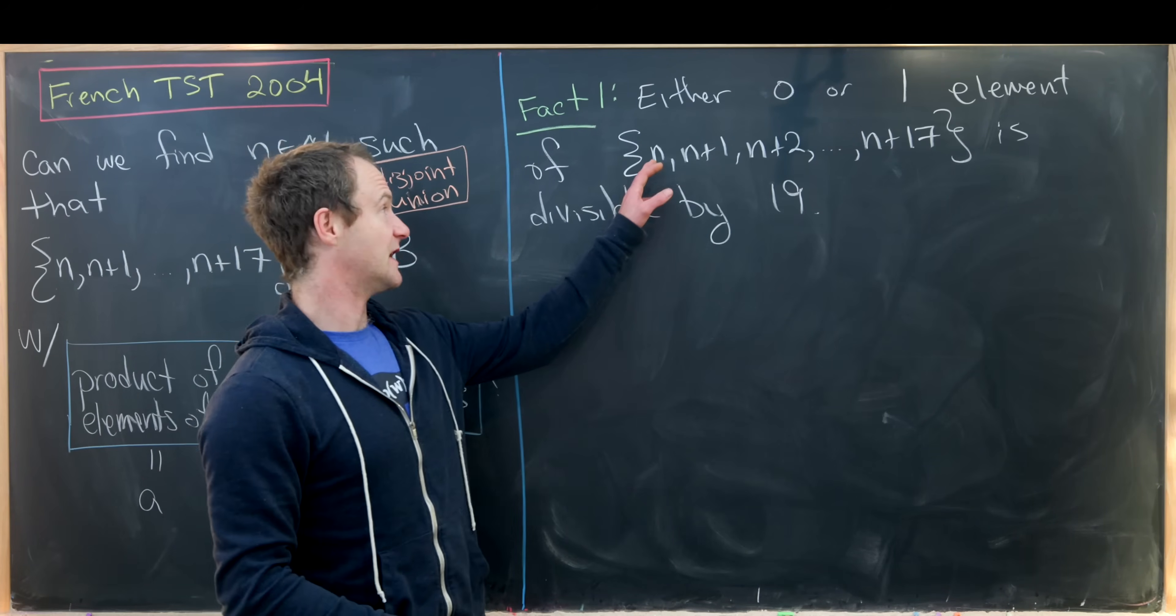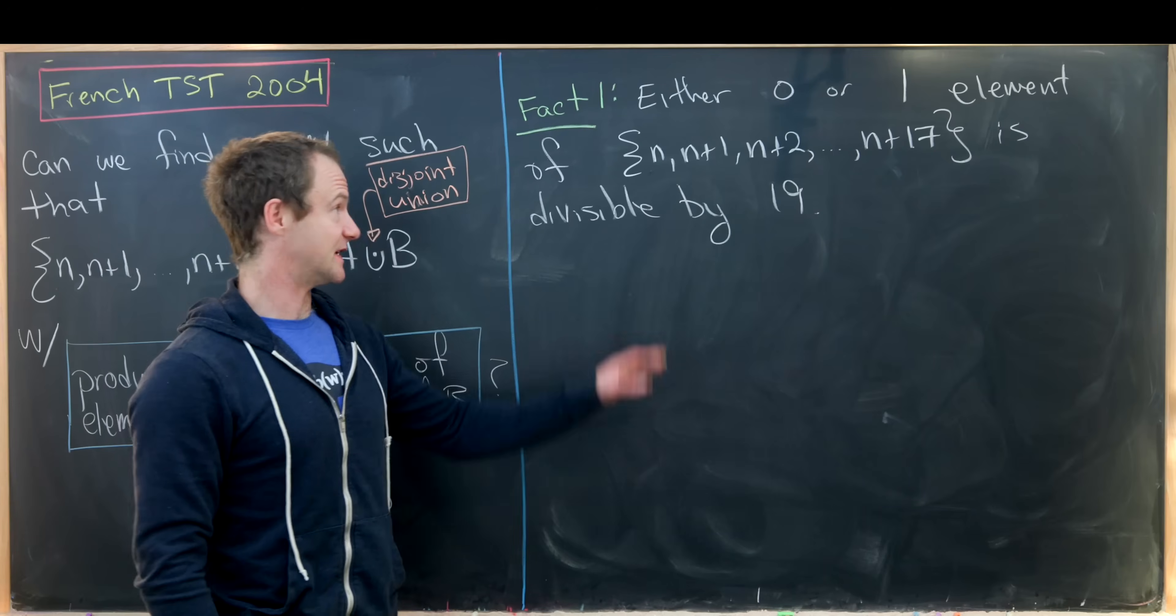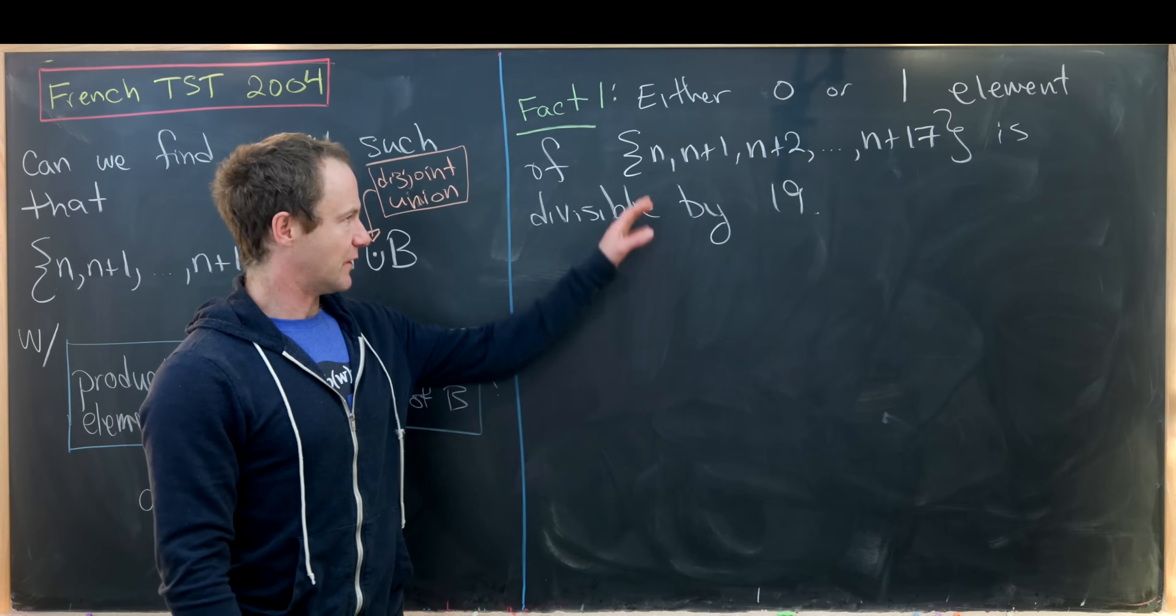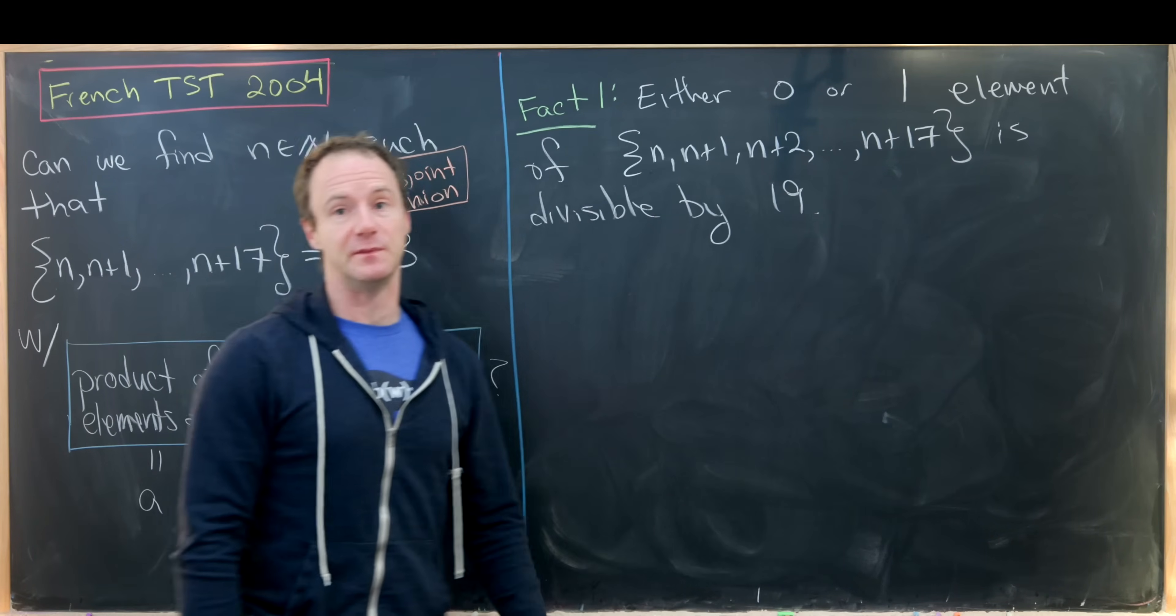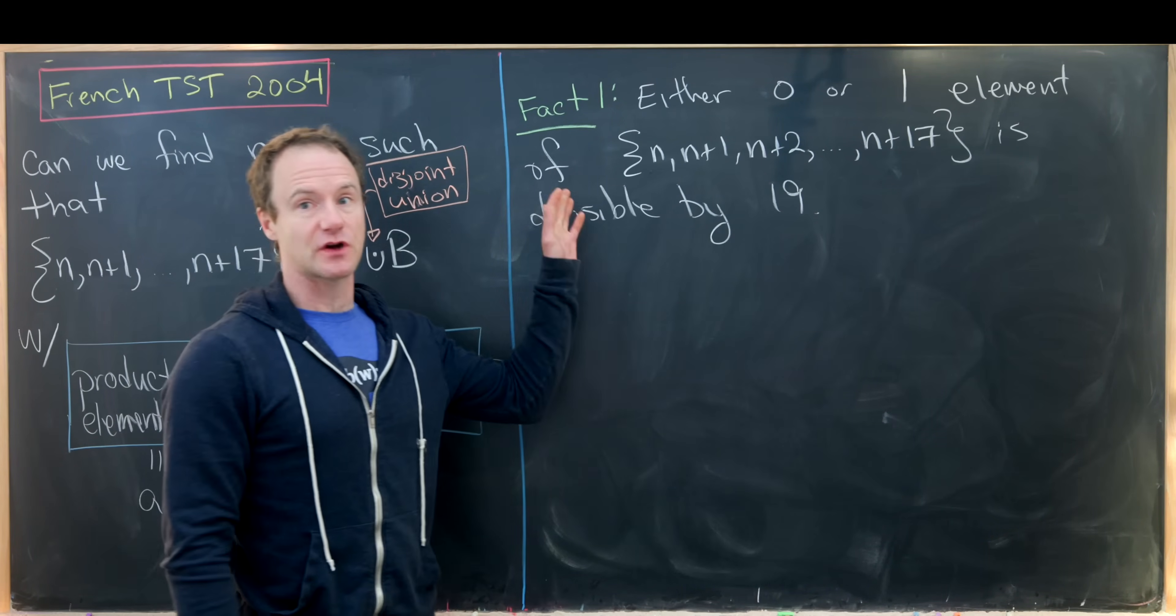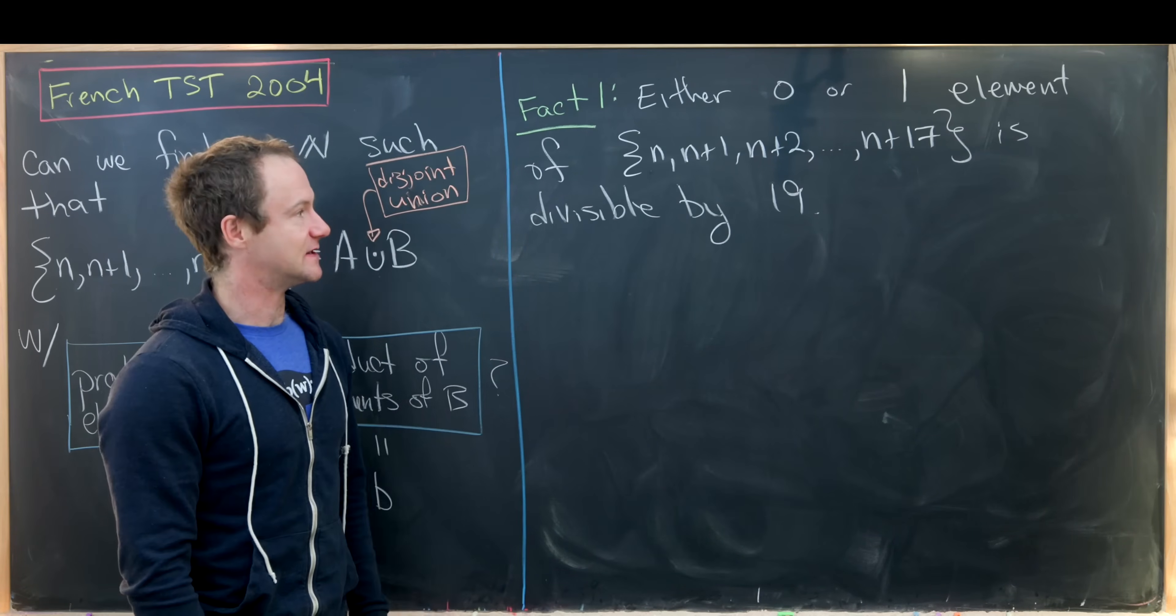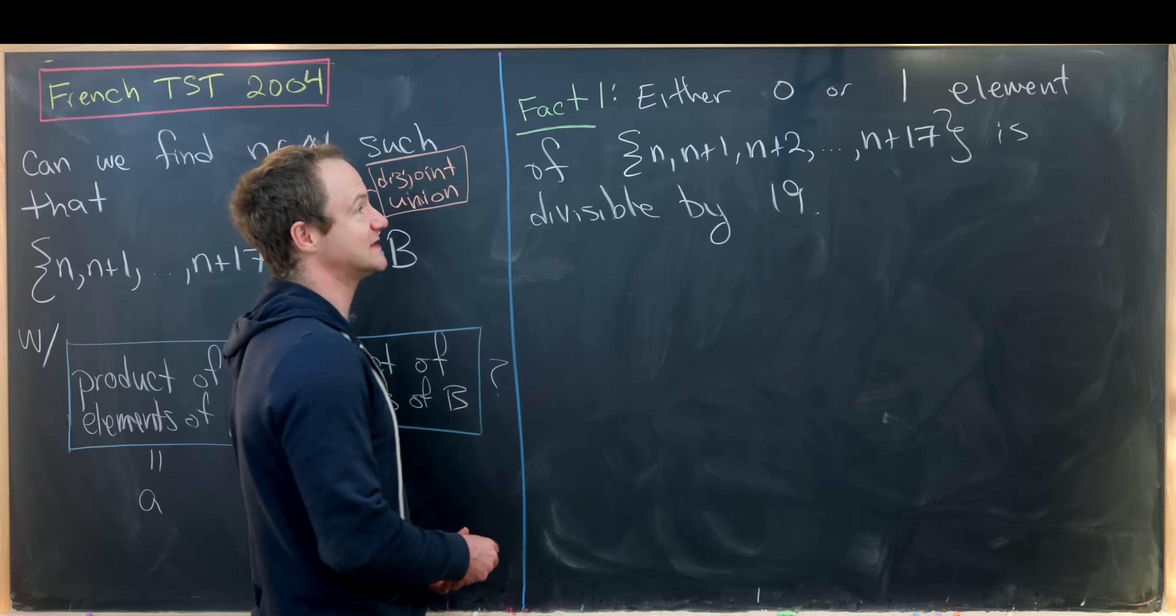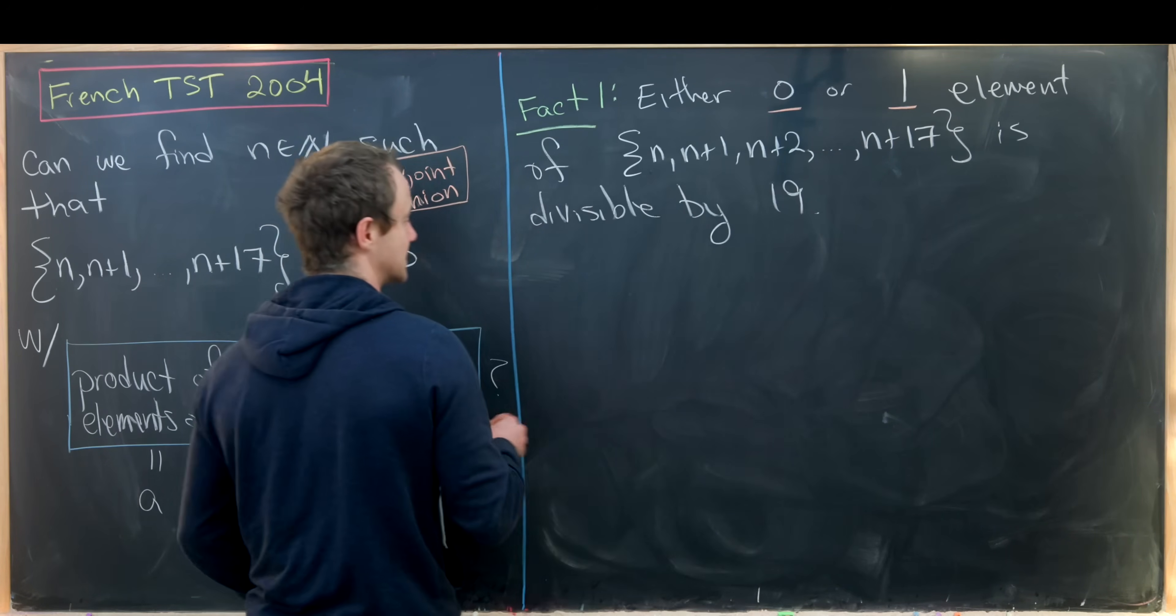For example, if the number n is equal to one, none of these is divisible by 19, because we have 1, 2, 3, all the way up to 18. But if we start with the number two, then this last one will be divisible by 19. If we start with the number three, the one that is next to last will be divisible by 19. This breaks us into a couple of cases, which are pretty obvious now, because we only have two possibilities.